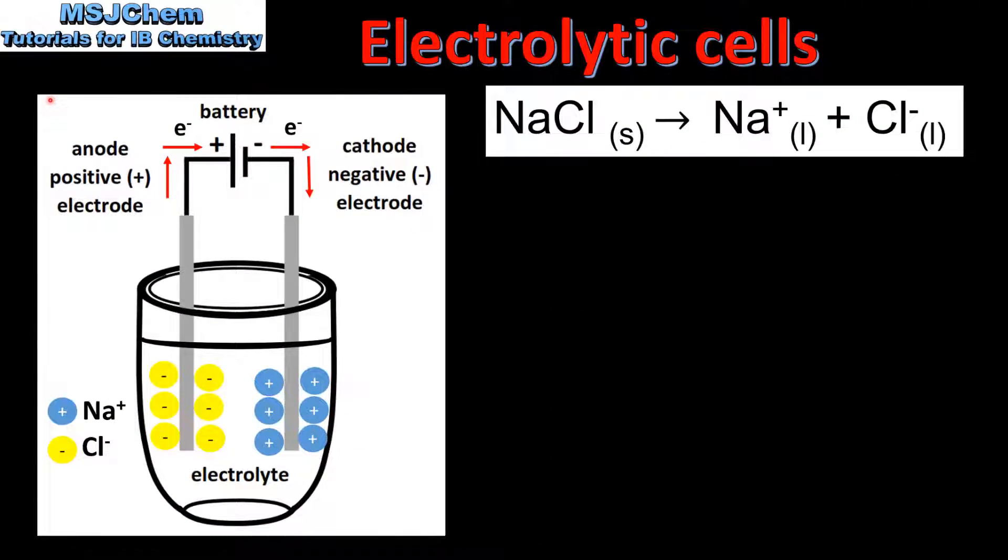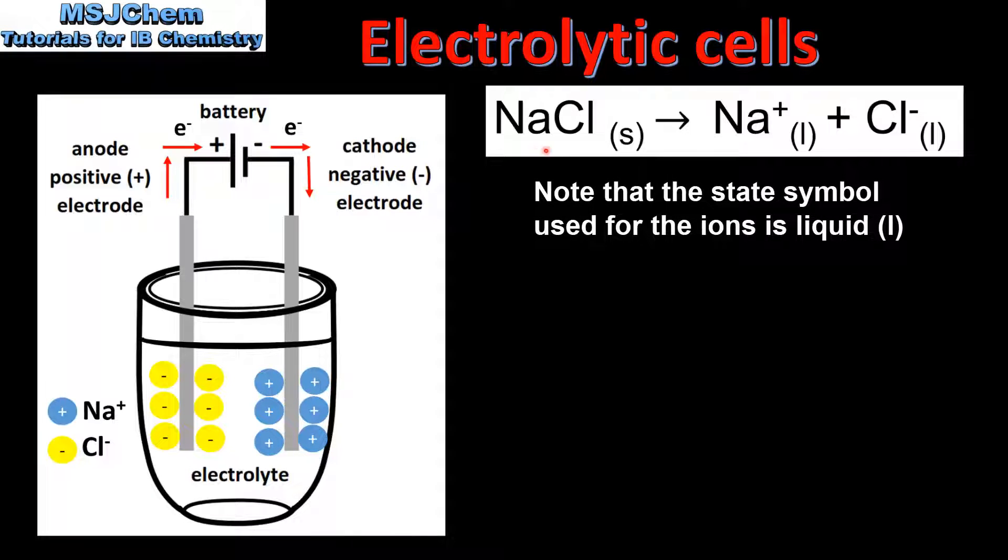Next we look at the electrolysis of molten sodium chloride. In this equation we have solid sodium chloride which is melted to form positive sodium ions and negative chloride ions.